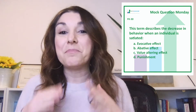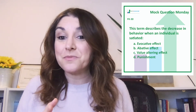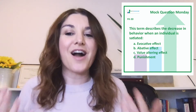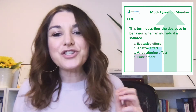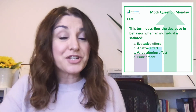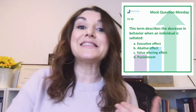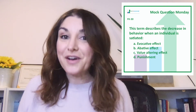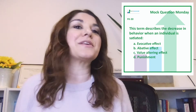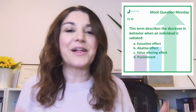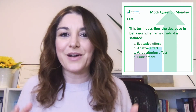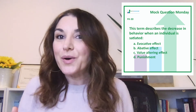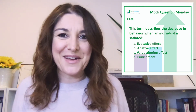Options A and B both describe a change in behavior when there is an MO — we'll call that the behavior-altering effect of the MO. Now, there are two types of MOs: the abolishing operation and the establishing operation. When we're talking about satiation, we're talking about abolishing operations — decreases in value and decreases in behavior. And that behavior-altering effect of the AO is specifically known as the abative effect.